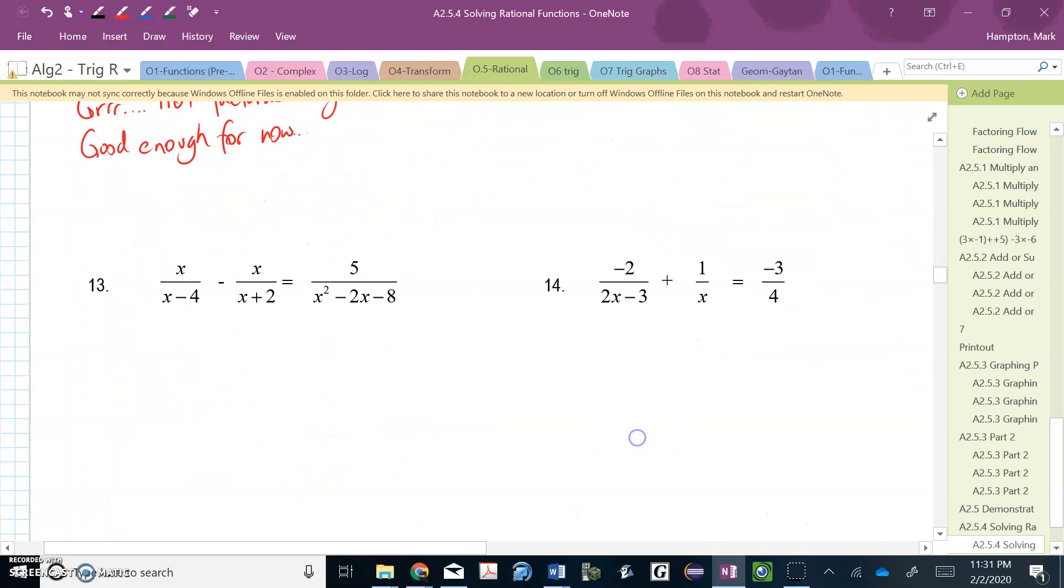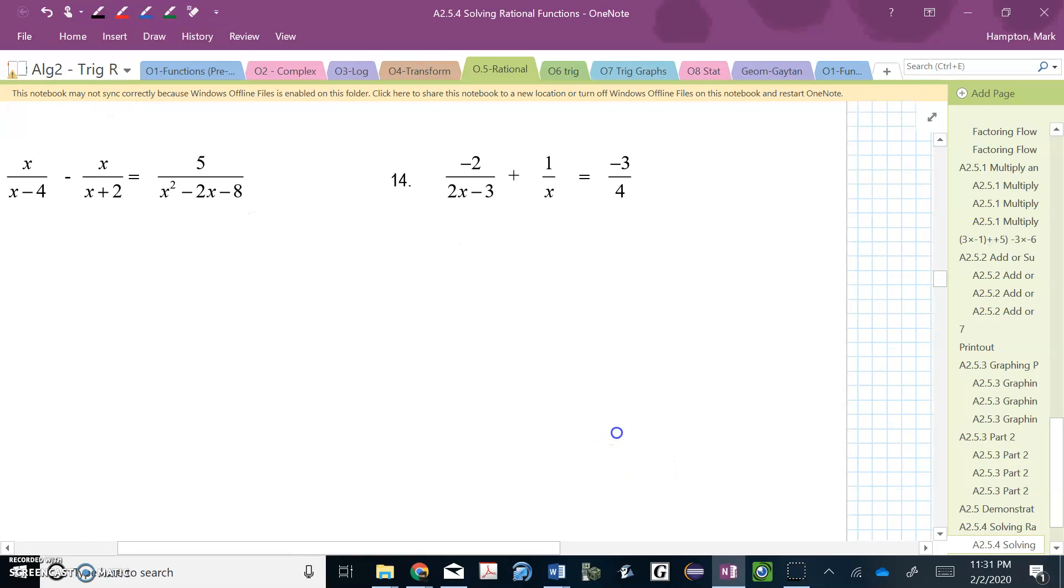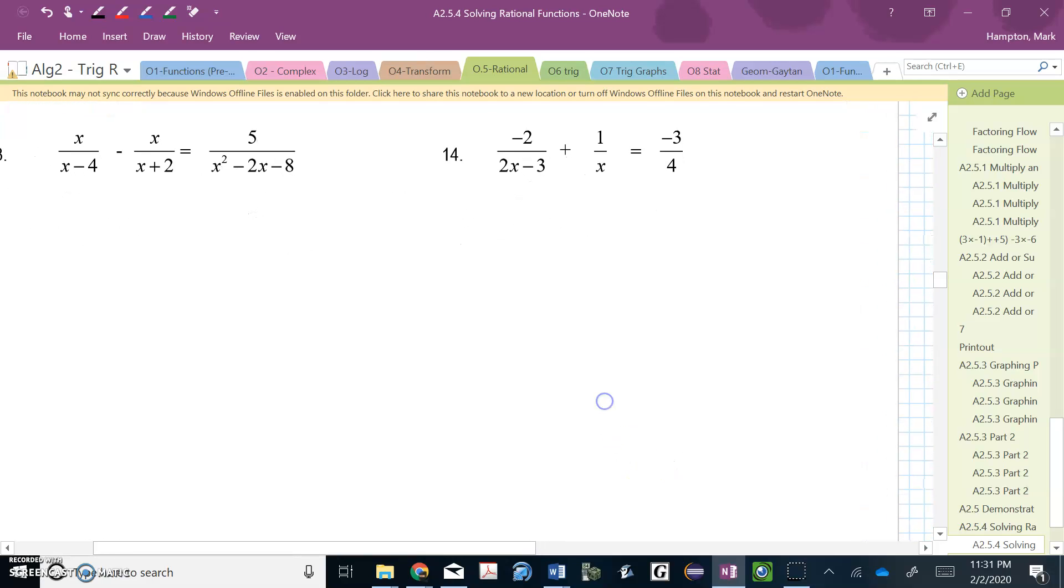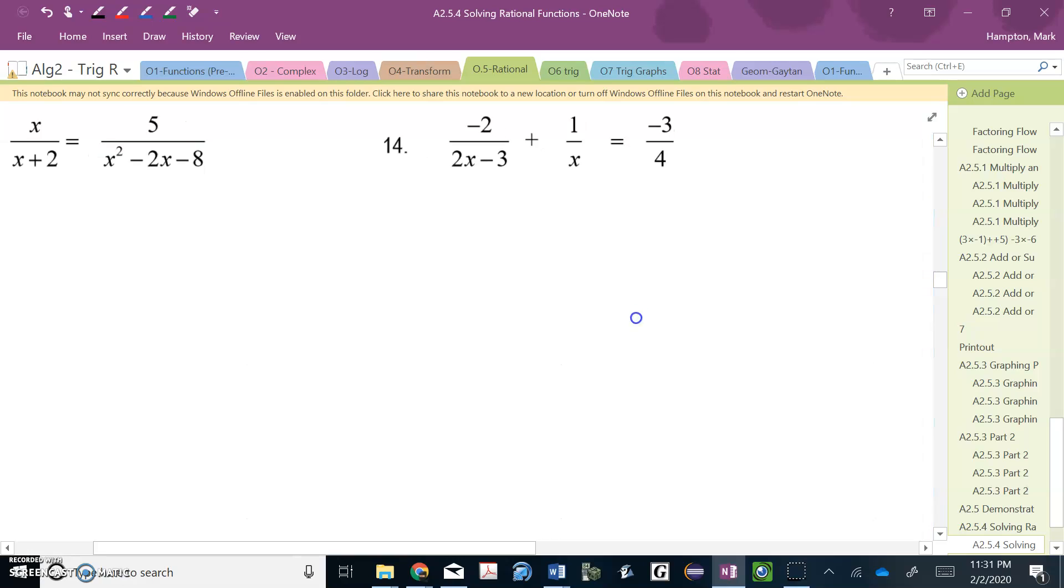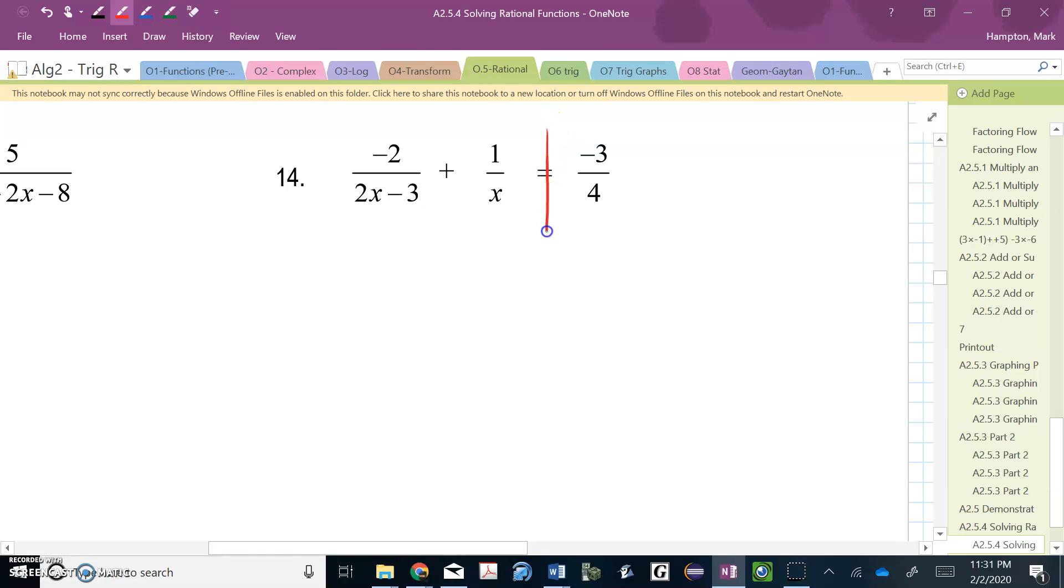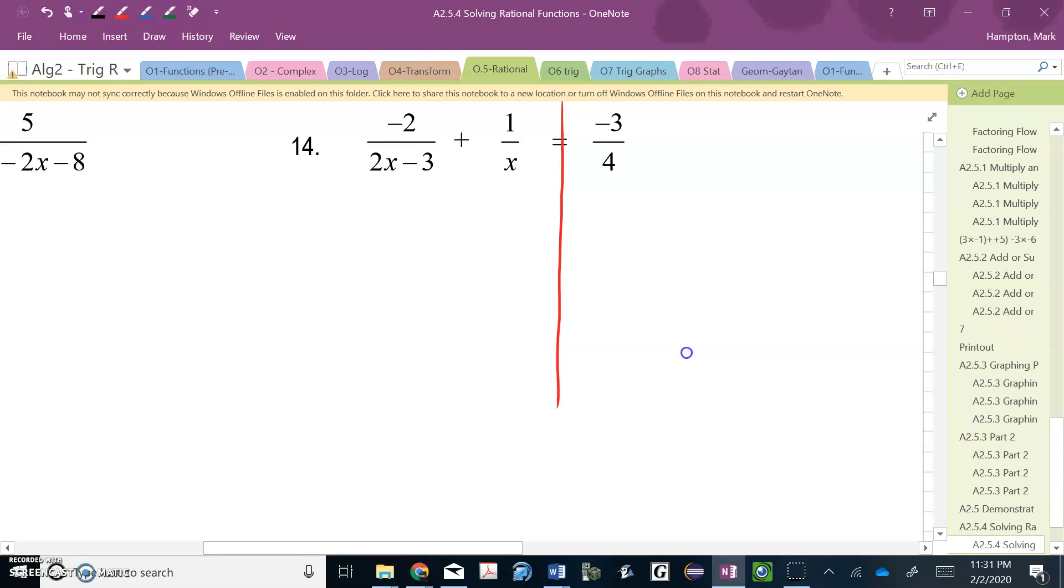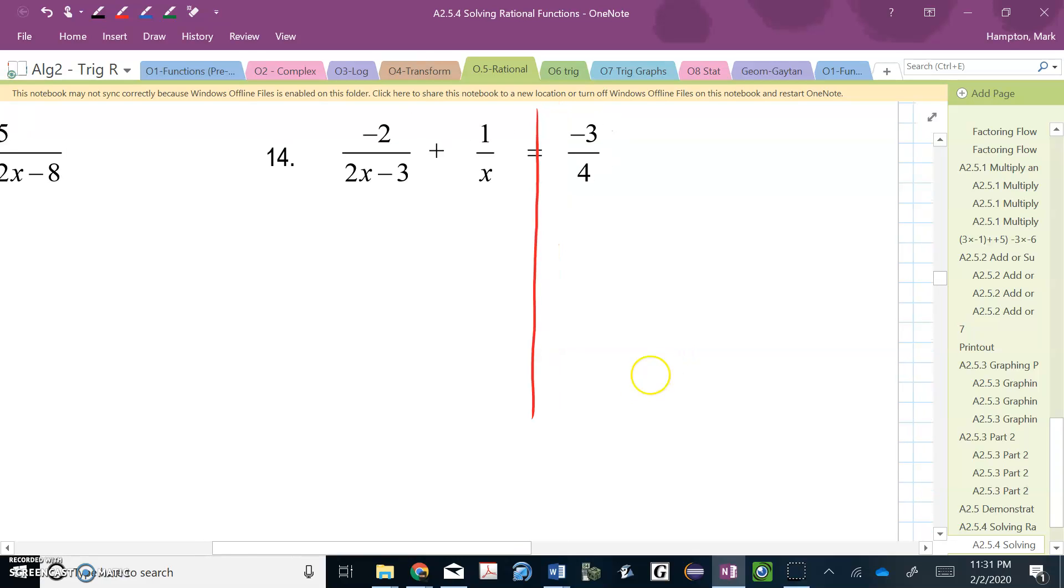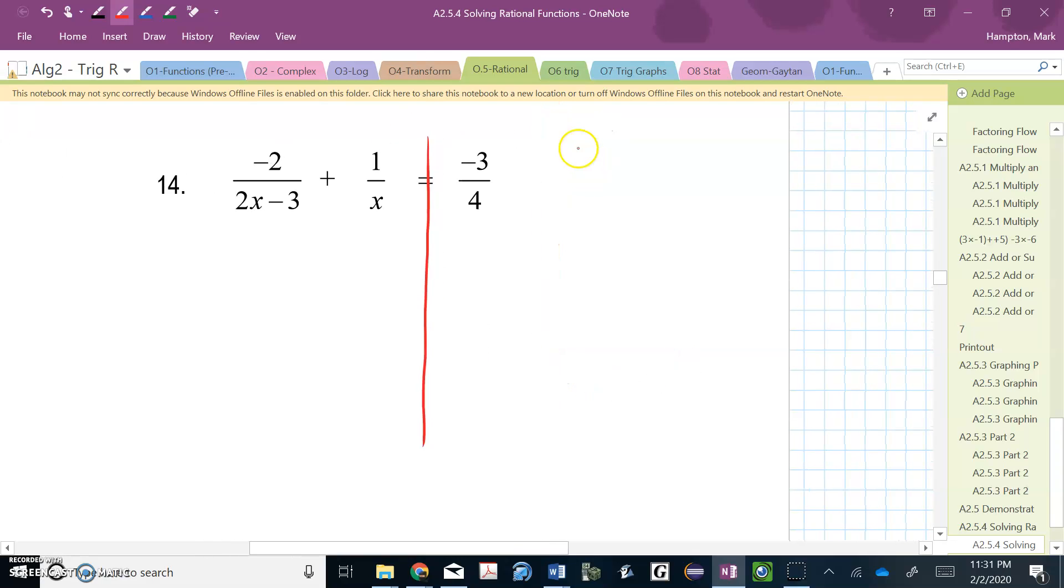We're going to jump ahead and go down to number 14 next. That's the last one I'm going to walk through on these straight algebra problems. And we're going to look at both sides of this, which here I have once again given you one that's been factored already. There isn't anything else to factor. Because the real challenge in number 14 is, can you find the least common denominator?